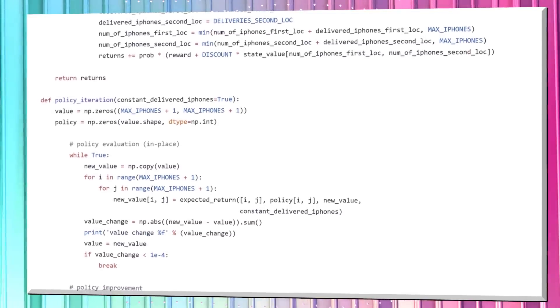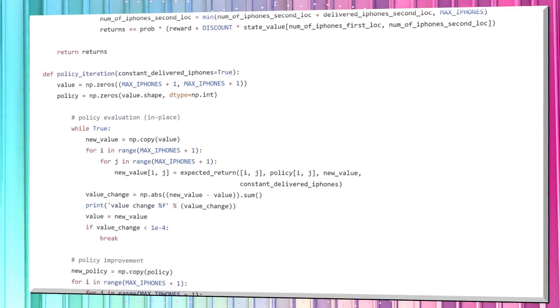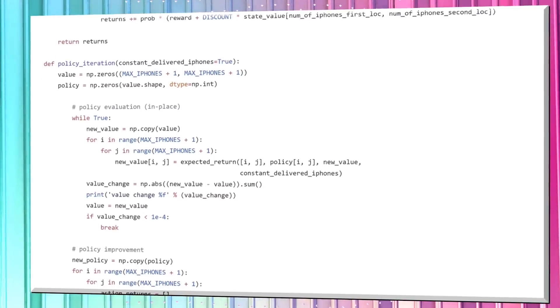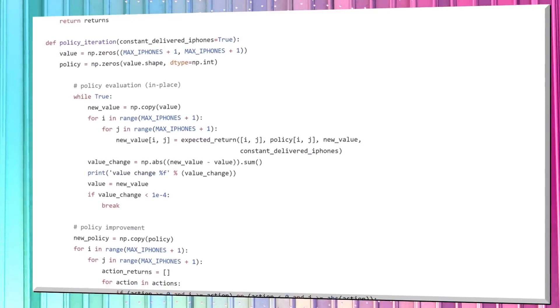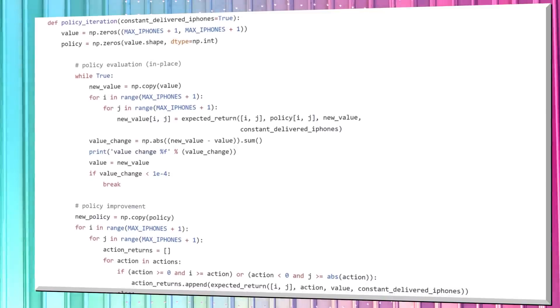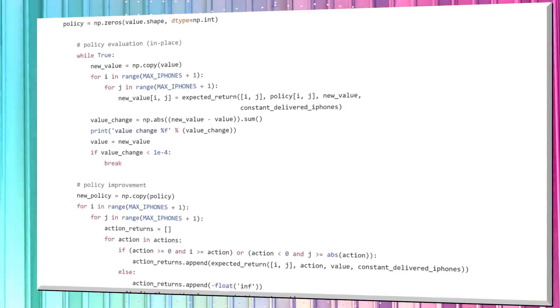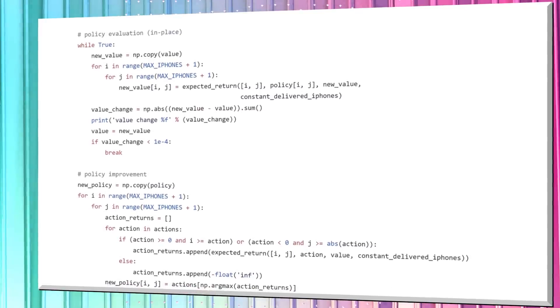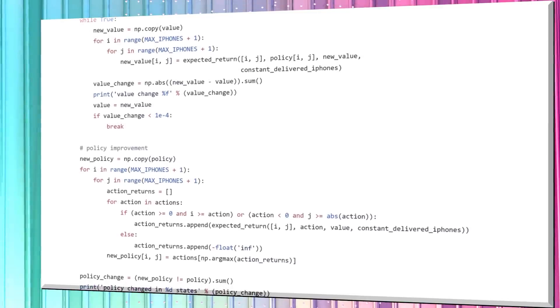Between when we first start evaluating and when we end up settling on a true value function, there are many value functions we'll have to create. This iterative application of the Bellman expectation equation is supremely useful. Once we've fitted the value function to the random policy we initialized at the beginning, which, by the way, was choosing to not move iPhones from one store to another, we're ready for some policy improvement.